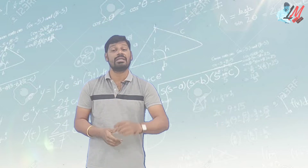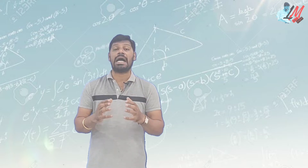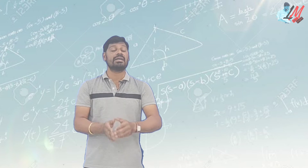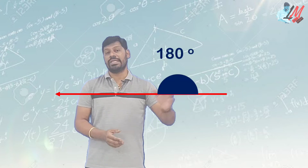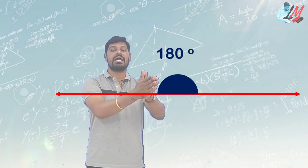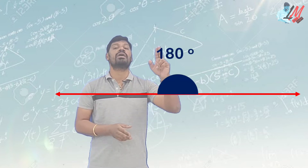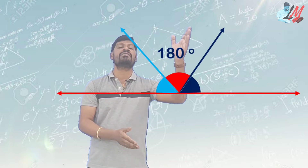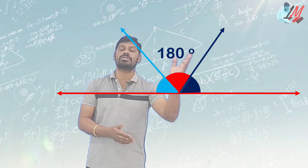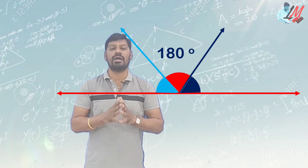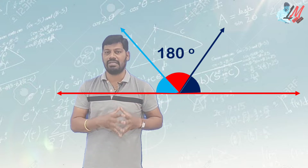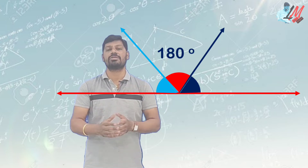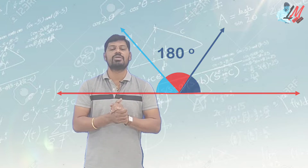One more important thing is about straight line angles. There are different kinds of angles. You can see a straight line. This straight line makes an angle of 180 degrees. If you divide this angle, the sum of all those angles is 180 degrees. This is just simple information. We will now solve the problem.